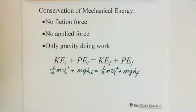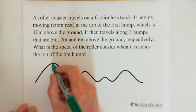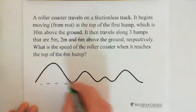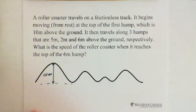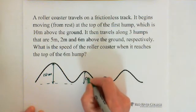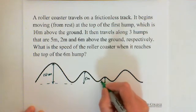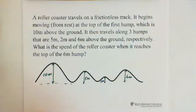So let's look at the question. A roller coaster travels on a frictionless track. It begins moving from rest at the top of the first hump, which is 10 meters above the ground. And it then travels along three humps that are 5 meters, 2 meters, and 6 meters above the ground, respectively. So what is the speed of the roller coaster when it reaches the top of the 6 meter hump?